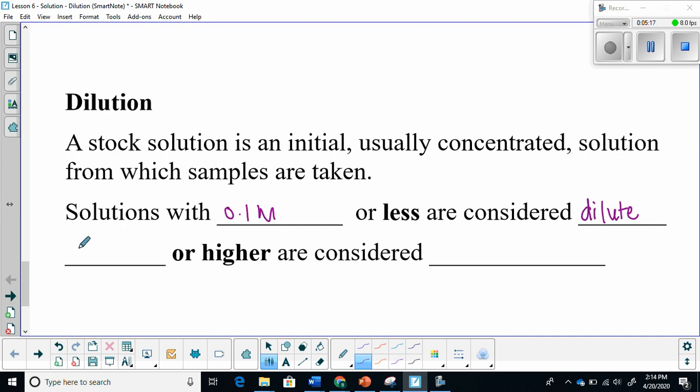Then, anything with a 1 mole per liter concentration or higher is considered to be concentrated. A lot of students will ask me, what about in between? For the purpose of this course, we're not going to classify the concentrations in between these two numbers. So if it's less than 0.1, we're going to call it dilute. If it's greater than 1 mole per liter, then we're going to call it concentrated. In between, we're not going to classify it.